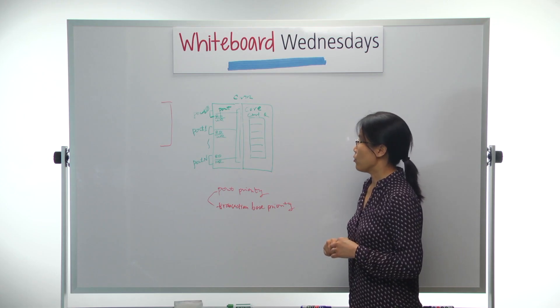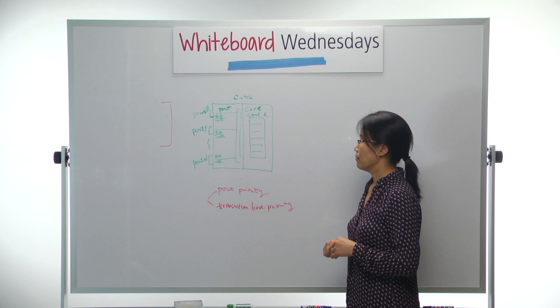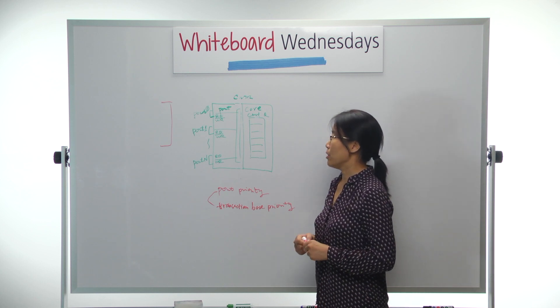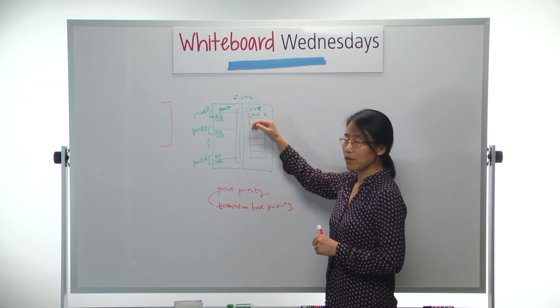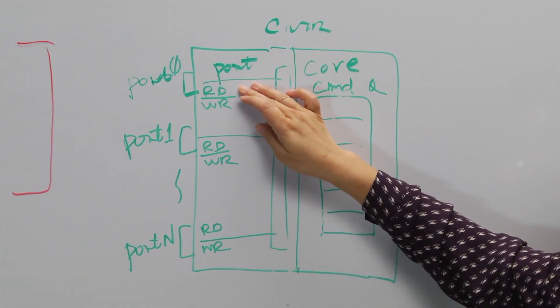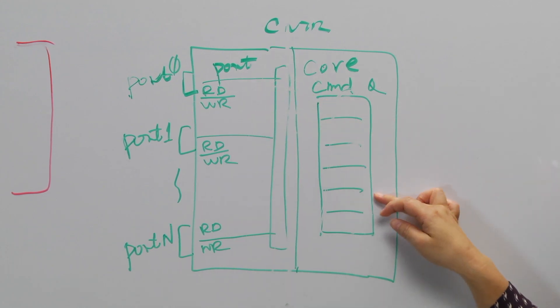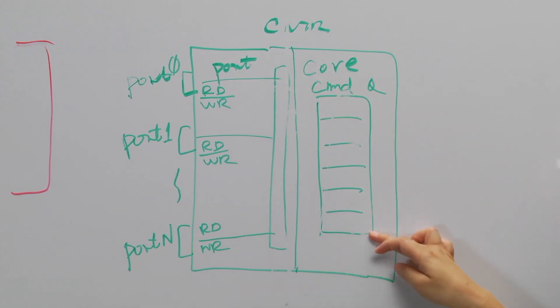The simplest one is the round-robin algorithm. By name, you can know that it will go through each port every cycle. Port 0, if it has active command and the command queue is not full, it will put the command into the command queue and then go to the next port.